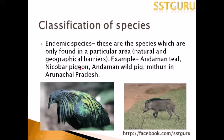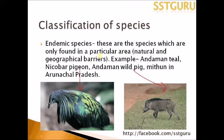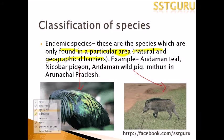Then comes Endemic Species — very important. These are species which are found only in a particular area, restricted due to natural environment or geographical barriers. Examples of endemic species include the Andaman teal, the Nicobar pigeon, the Andaman wild pig, and the Mithun in Arunachal Pradesh. They are all found in specific areas and so are called endemic species.